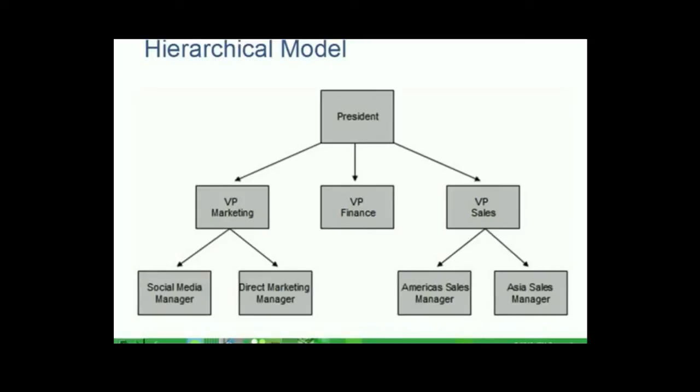The first hierarchical database management system was IMS, which stands for Information Management System, released by IBM in 1968. It was originally built as the database for the Apollo space program to land the first humans on the moon. IMS is a very robust database that is still in use today at many companies worldwide.